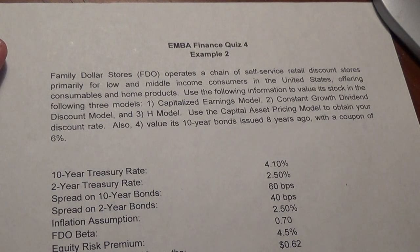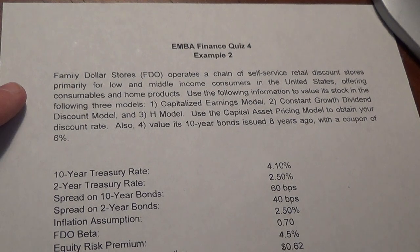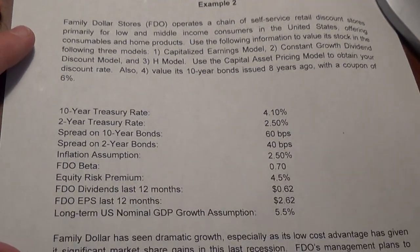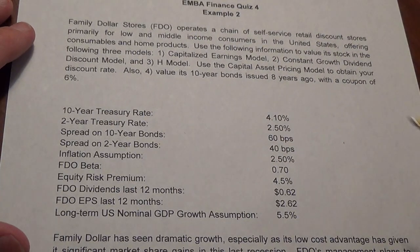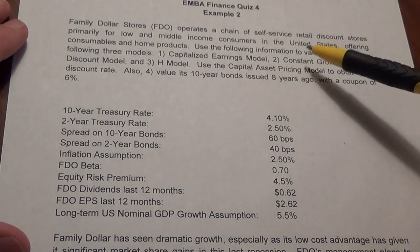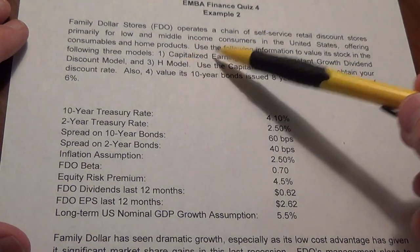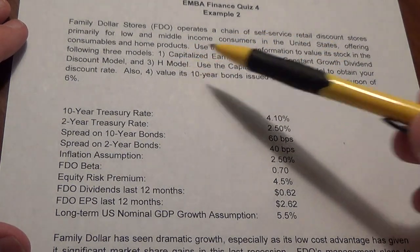In this video I'll be working an example for quiz 4. I'll be doing the second example, the one for Family Dollar. Here are all of our assumptions. What we want to do is value the stock using three models: the Capitalize the Earning Model, the Constant Growth Model, and the H Model.